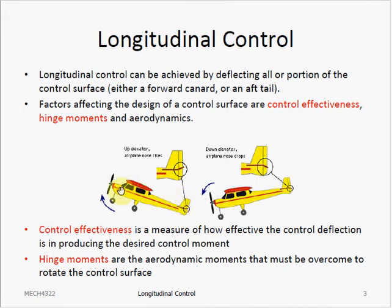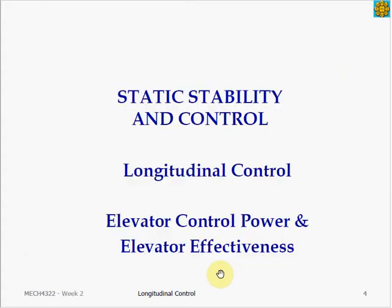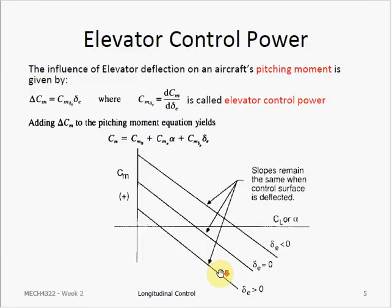The elevator control surface design is based on two parameters: control effectiveness and hinge moments. Control effectiveness is a measure of how effective the control deflection is in producing the desired control moment, while elevator hinge moments are the aerodynamic moments that must be overcome to rotate the control surface. The elevator control power describes how the elevator design influences the aircraft's pitching moment coefficient.